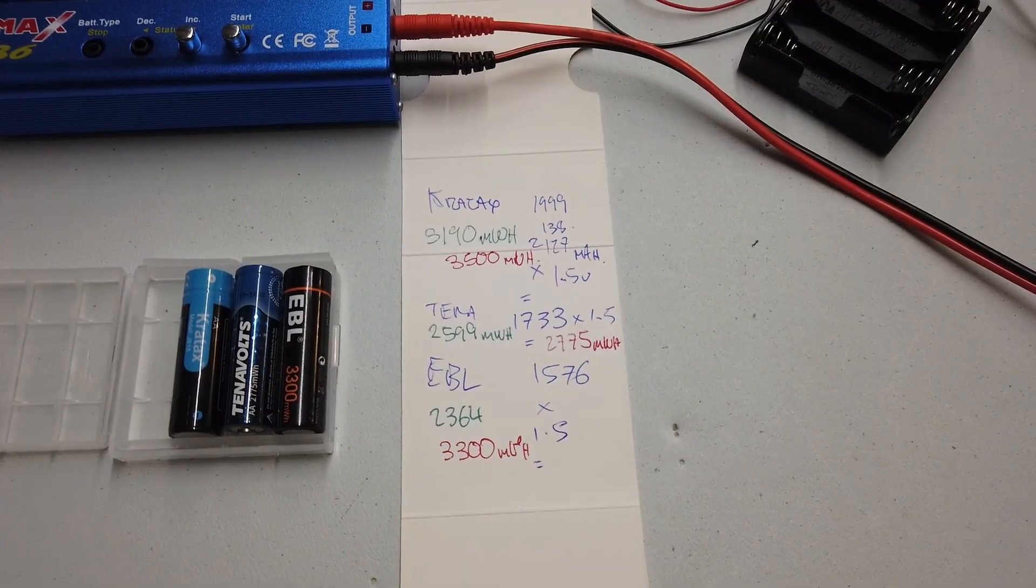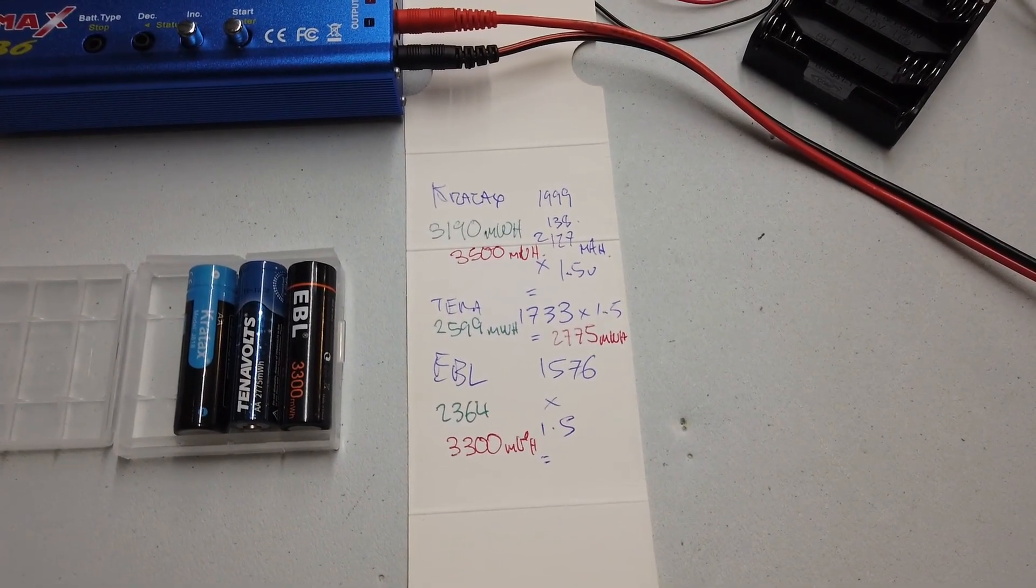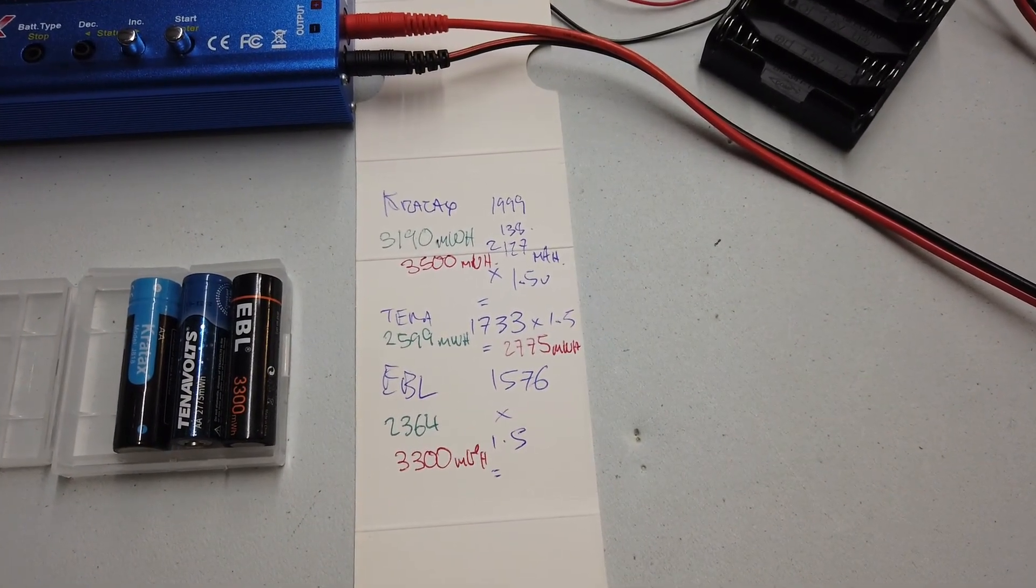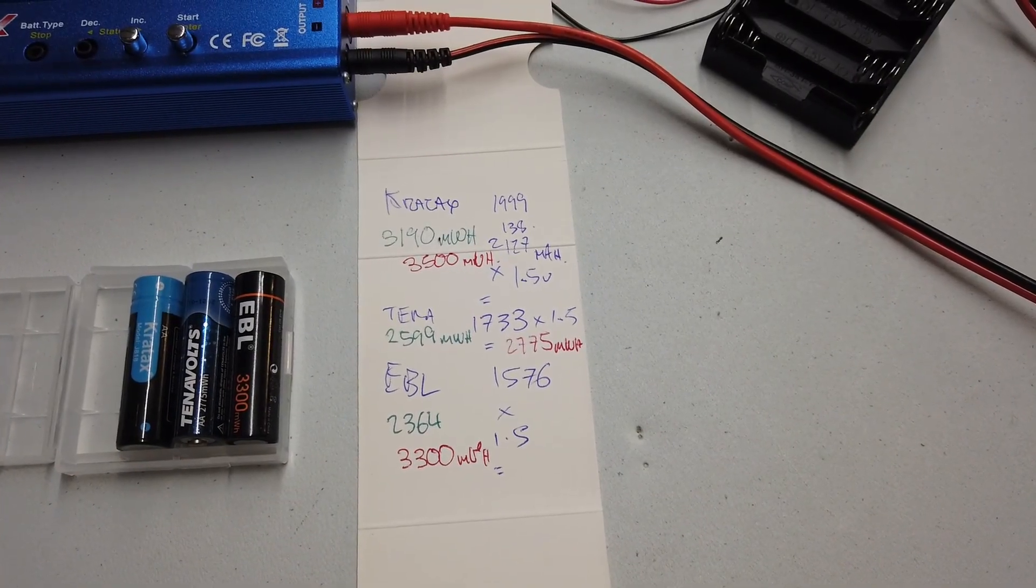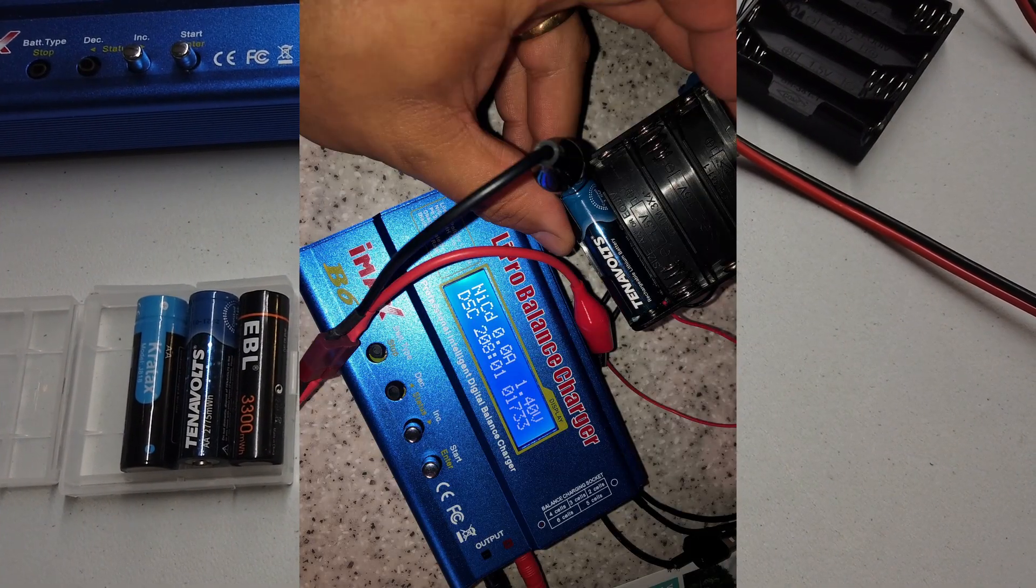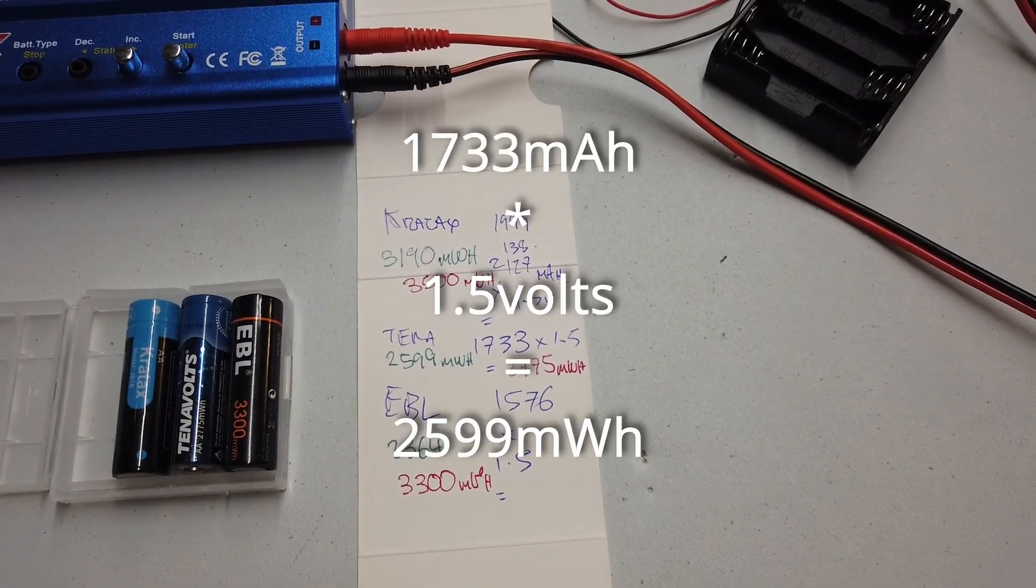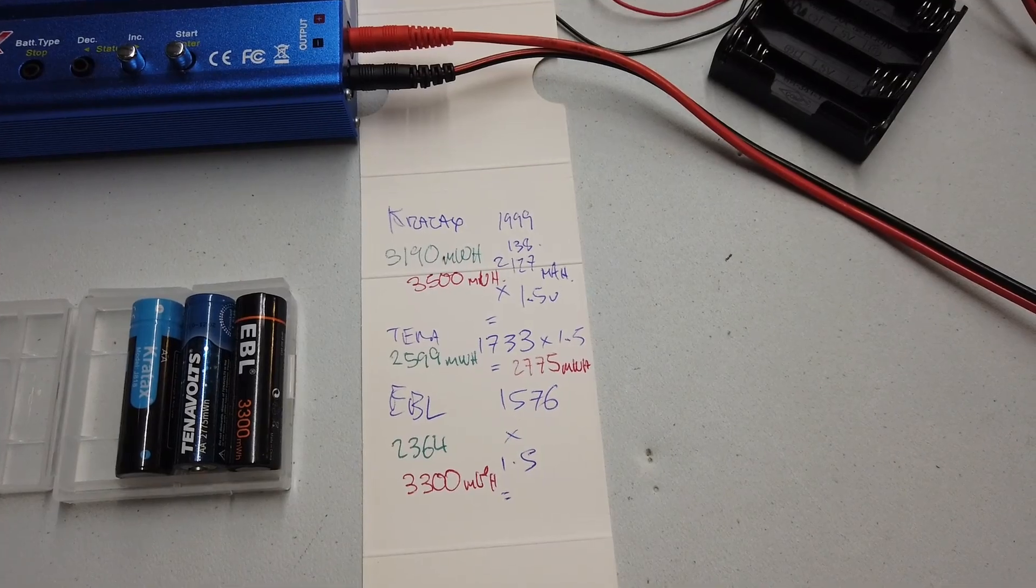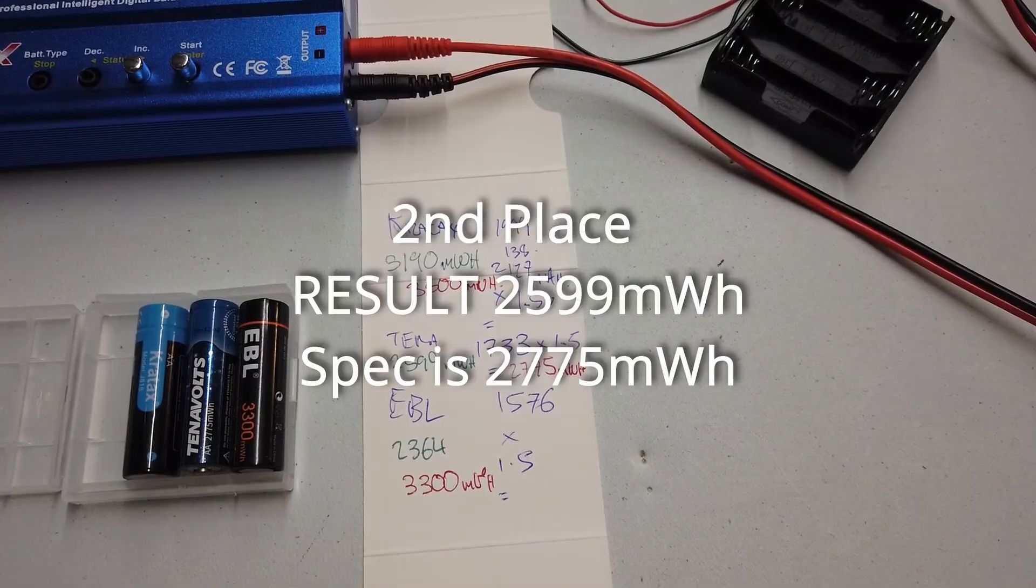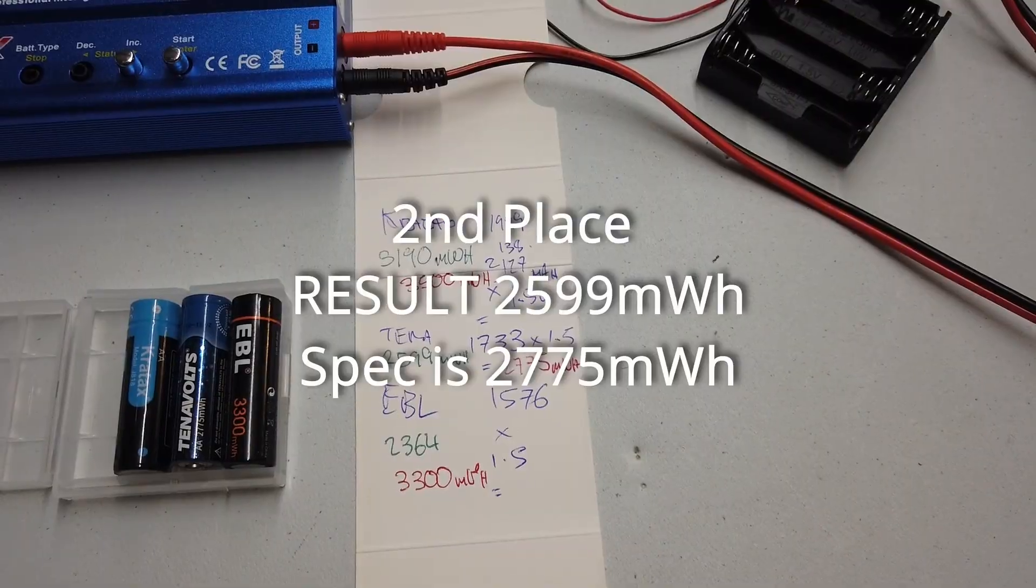As far as Tenovolts go, they came in second place, but please remember that I did get one that didn't work at all, which was quite amusing. Tenovolts manufacturer's guidelines suggest that you get 2775 milliwatt hours out of these batteries. In my case I got 1733 milliamp hours, multiplied by 1.5 volts, which gives us 2599 milliwatt hours. So again, a little shy by about 176 milliwatt hours.